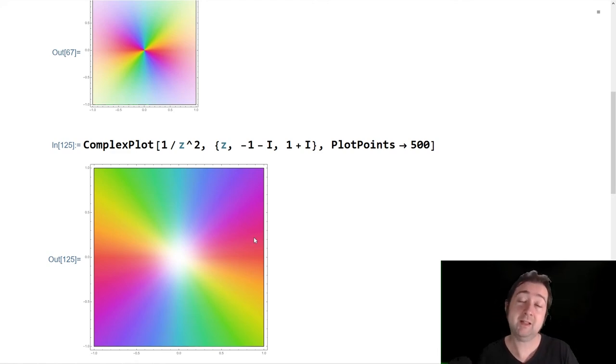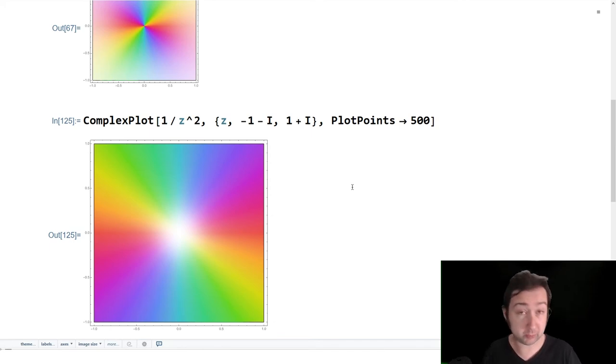And it's doing it twice. And so if you've seen any complex analysis, this is what a pole of order two looks like. What's actually going on here is that the argument is wrapping twice around the pole.